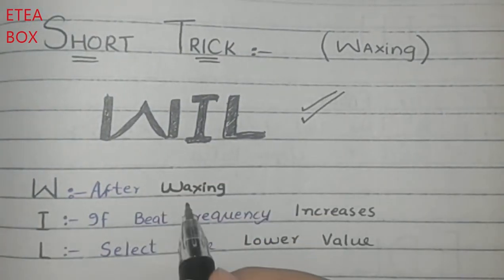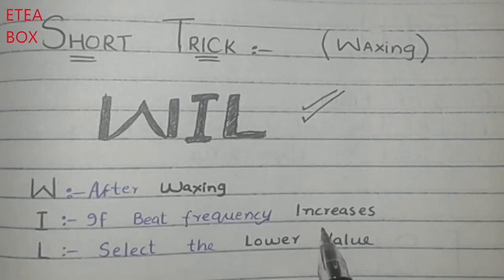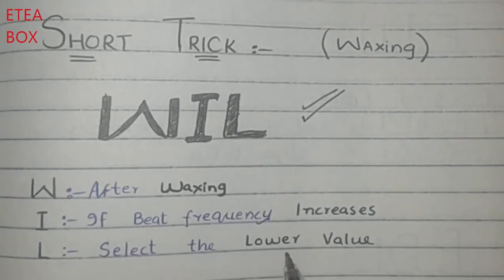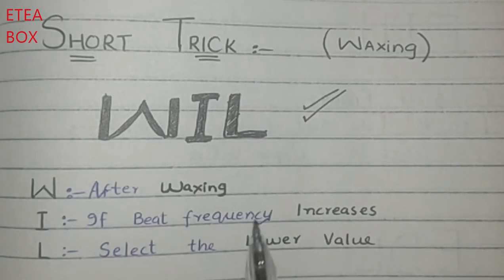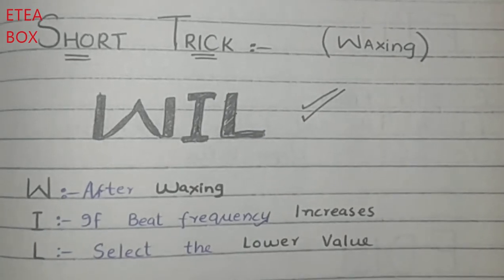After waxing, if you wax the tuning fork and the beat frequency increases, then you will select the lower value. So: after waxing, if beat frequency increases, select the lower value.